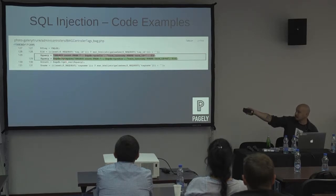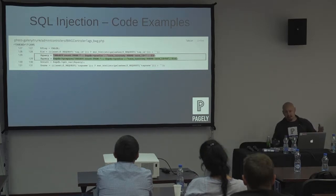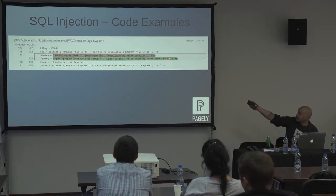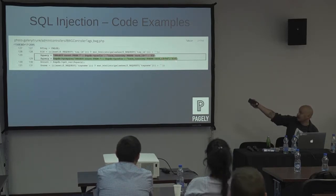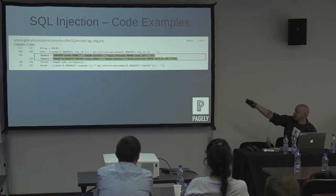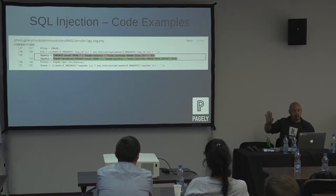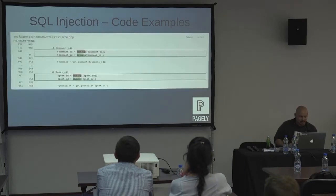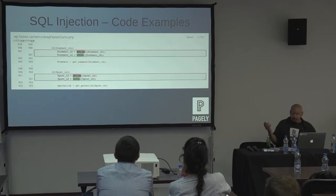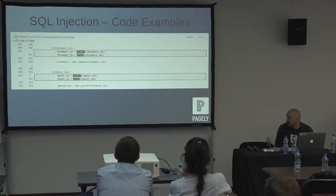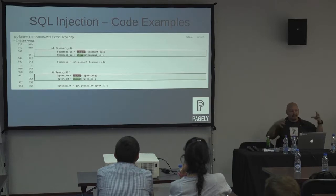The fix using `$wpdb->prepare()` is preferred. Some tried to use `escape_sql`, but that escapes without validating what it is. The better fix here was to use `intval()`, which forces whatever value you have to be an integer — it doesn't allow it to be a string or any other unexpected data type.